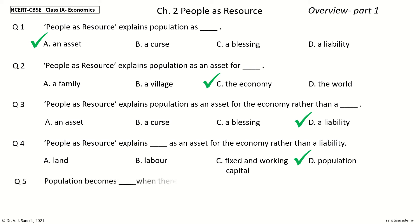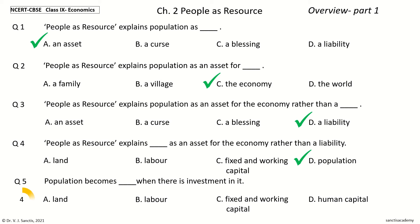Question 5: Population becomes ___ when there is Investment in it. The options are: Land, Labour, Fixed and Working Capital, Human Capital. Your time to choose. And the answer is: Human Capital. So, Population becomes Human Capital when there is Investment in it.